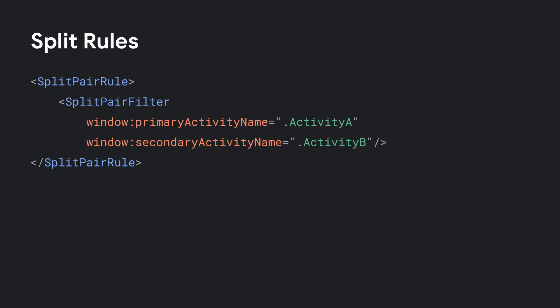Let's check how to integrate the feature into your app — it just takes a couple of steps. First, declare the library dependency in your build file. Next, create an XML file in your assets and provide rules defining which activities should be split and the properties of the splits. For example, to put activities A and B in a split when B is launched on top of A, add a single SplitPairRule with default configuration and a single filter that matches activity component names. When activity B is started from A, the filter will be checked and matched, and the new split will be automatically created by the library.